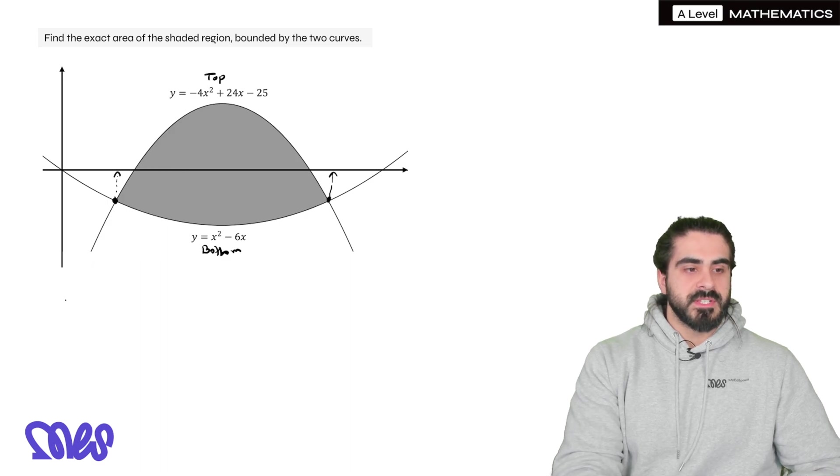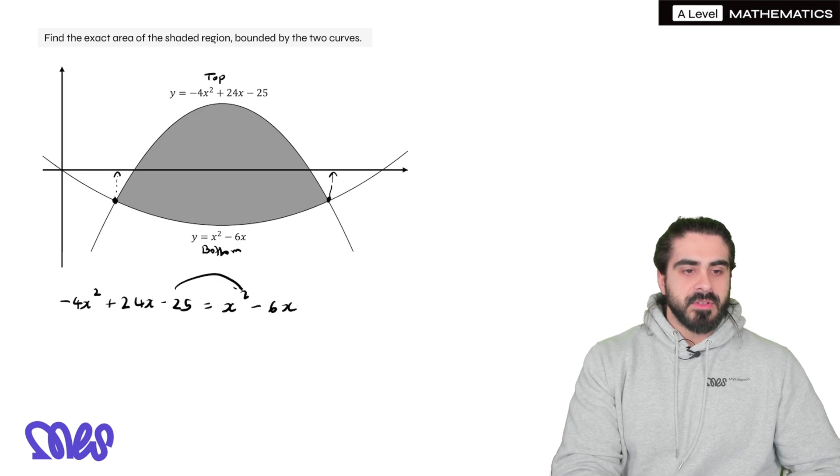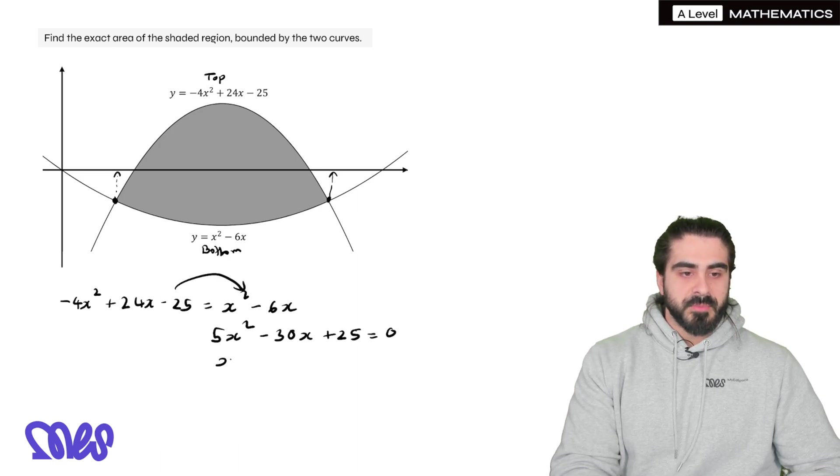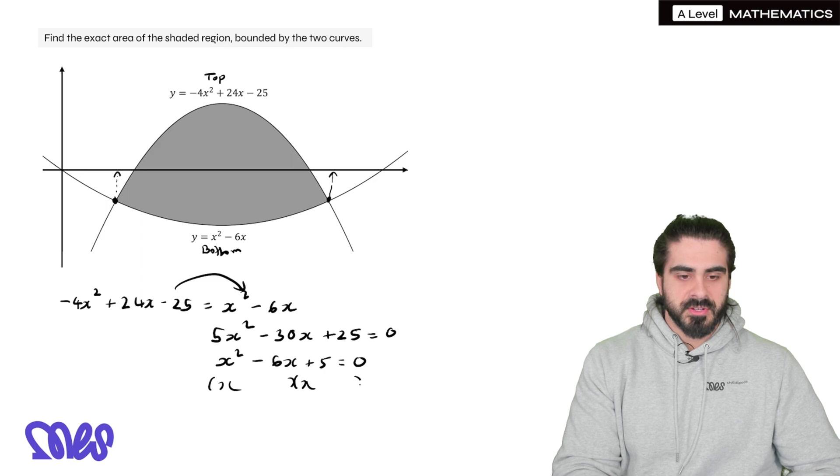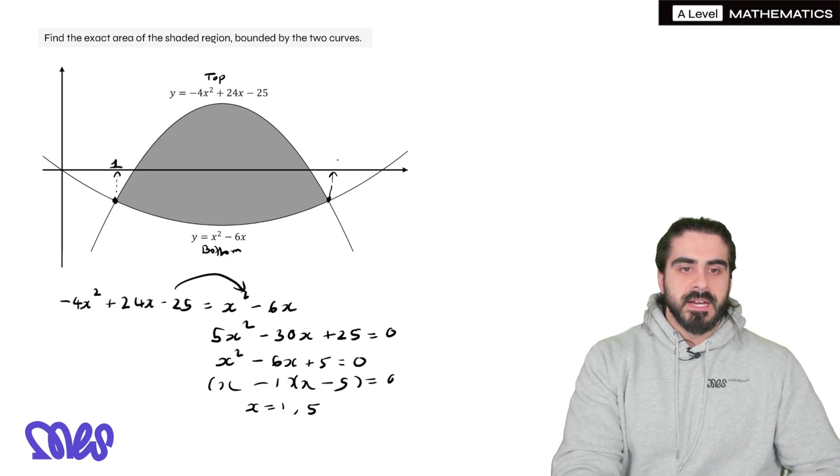So the first thing we want to do is we want to find these points of intersection which will form our limits. So we know how to find points of intersection. We equate the two functions. So -5x^2 + 30x - 25 = x^2 - 6x. Let's add everything over to this side. Divide through by 5. So x is -1 and 5.